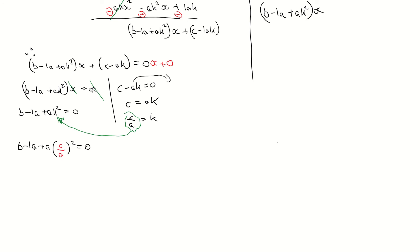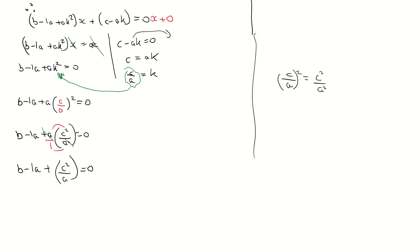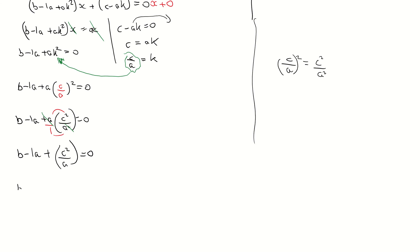Substituting k equals c over a into b minus a plus ak squared equals zero gives b minus a plus a times c over a squared equals zero. Squaring c over a means squaring numerator and denominator: that's c squared over a squared. Multiplying a by c squared over a squared, one factor of a cancels, leaving b minus a plus c squared over a equals zero.